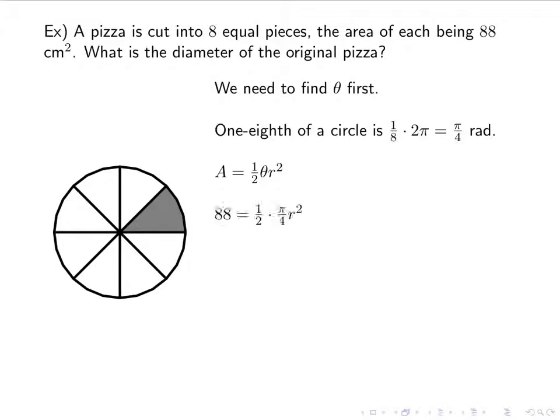Area is 1/2 θr². We'll plug in what we know. The area is 88, θ is π/4, and we're looking for r². If I multiply by 2 and by 4/π, I get that r² is 88 times 2 times 4 divided by π. I simplify that, and I get 704 divided by π. I want r, so I'm going to square root that, and I get roughly 14.97 centimeters. That's r, but remember we want the diameter, so I need to double that. Remember that 2r equals d. The diameter is 29.94 centimeters.